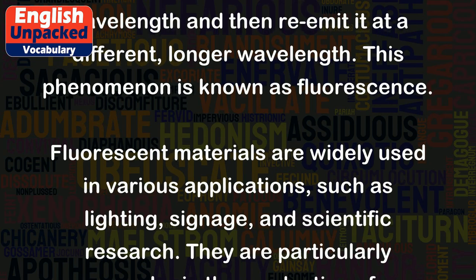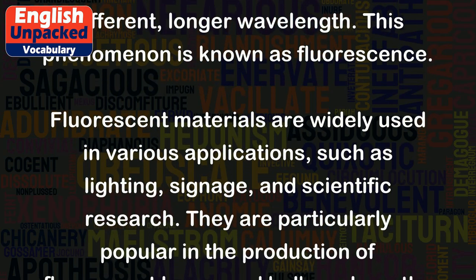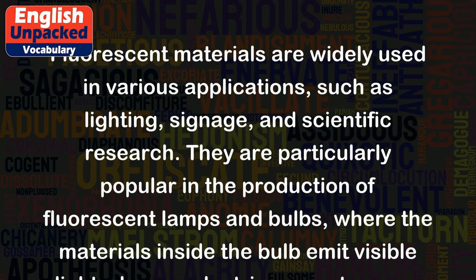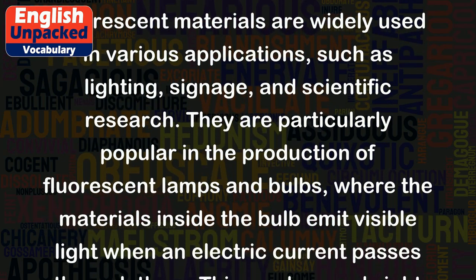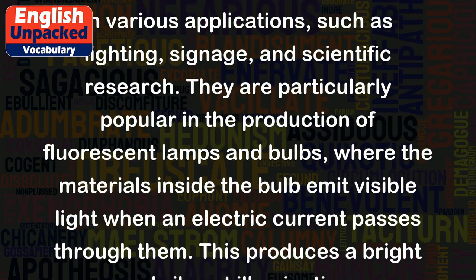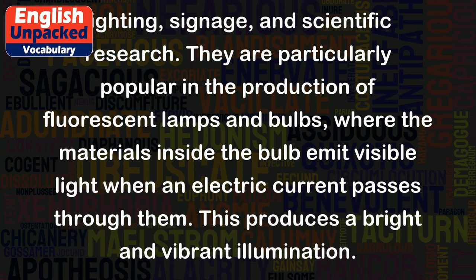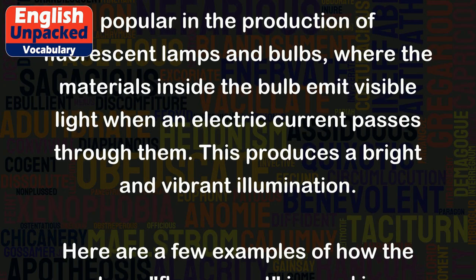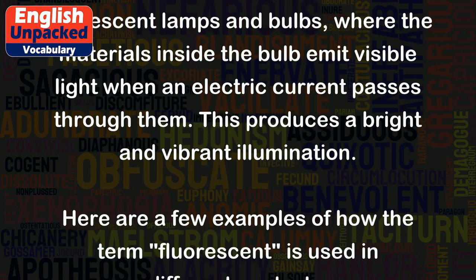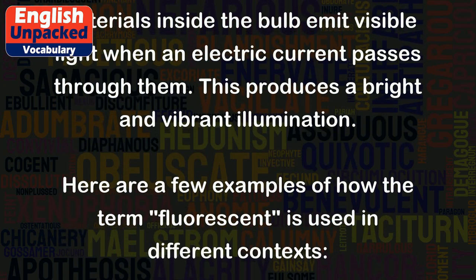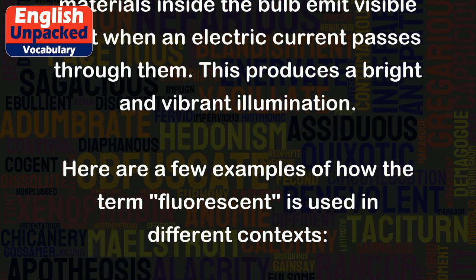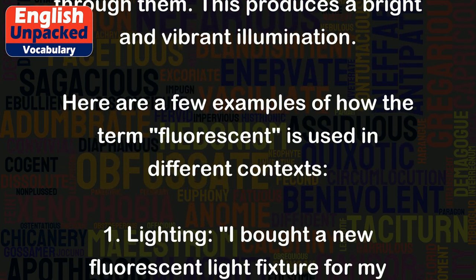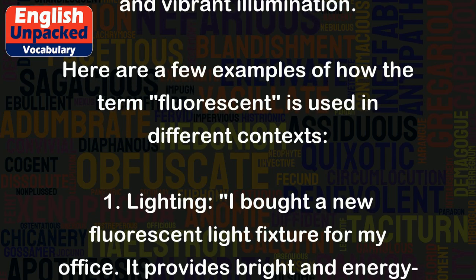Fluorescent materials are widely used in various applications, such as lighting, signage, and scientific research. They are particularly popular in the production of fluorescent lamps and bulbs, where the materials inside the bulb emit visible light when an electric current passes through them. This produces a bright and vibrant illumination. Here are a few examples of how the term fluorescent is used in different contexts.